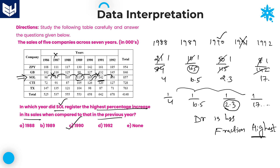Whenever you are solving problems related to this model — percentage increment or percentage decrement — if you want to compare values like this, equalize all the numerators or all the denominators so that you get the answer quickly. If all numerators are equal, the fraction with the smaller denominator is the highest. This gives the order: 1990 is first highest, then 1988, then 1989, then 1992.